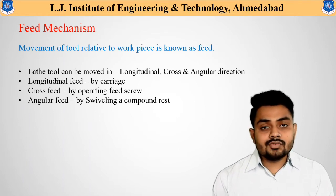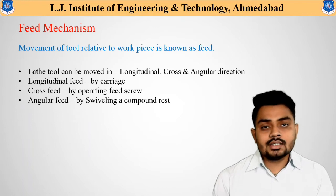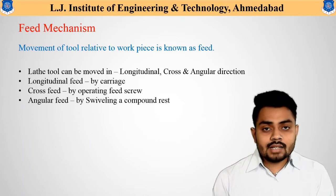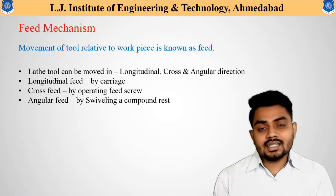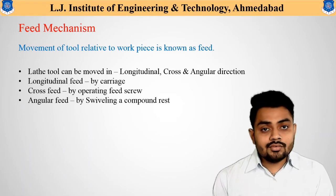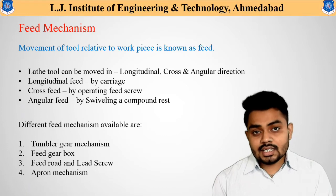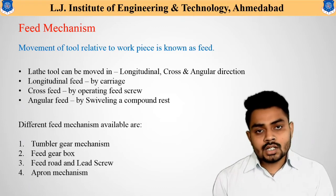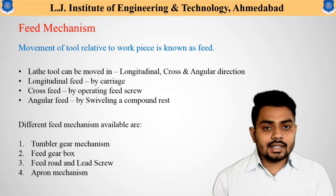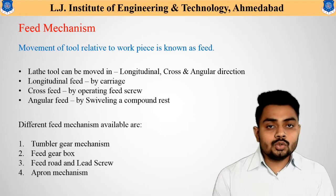In our previous lectures we discussed that these movements are given to the tool using different types of wheels or by hand, but all these movements can also be given automatically using different types of mechanisms. These are called feed mechanisms. The different types of feed mechanisms are: the tumbler gear mechanism, the feed gearbox, the feed rod and lead screw, and the apron mechanism. The tumbler gear mechanism and the apron mechanism are the two most important mechanisms for providing automated movement to the tool.